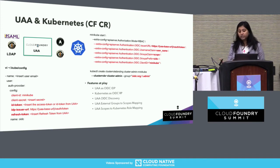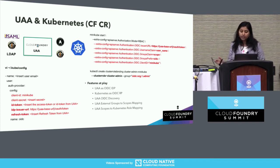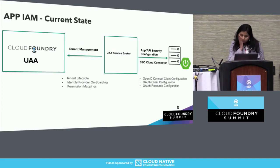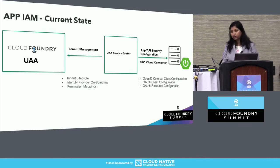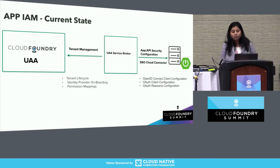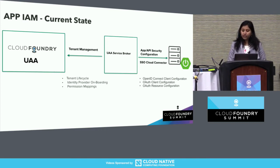You could do this at a user level — individually specifying that a given user gets to be a cluster admin — but that model does not scale; you want to do this at a group level. Now, what about app IAM? How UAA today is used to secure apps: you can create multiple tenants in UAA and use that identity zone or tenant to secure your apps. Pivotal has written their own service broker for UAA called the Pivotal Single Sign-On Service, and other foundation members like GE and SAP also have their own service brokers.